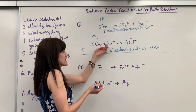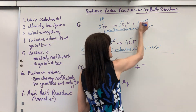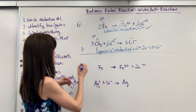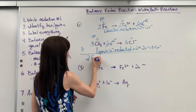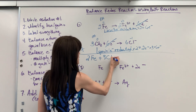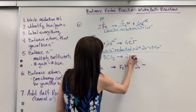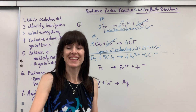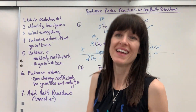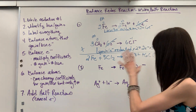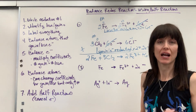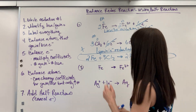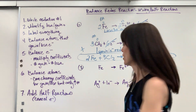Now we add the two half reactions together. Six electrons on the reactant side cancel with six electrons on the product side — that's how you check yourself. Adding everything: 2 Fe + 3 Cl₂ yields 2 Fe³⁺ + 6 Cl⁻. That is the balanced redox reaction using the half reaction method.